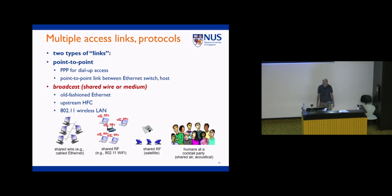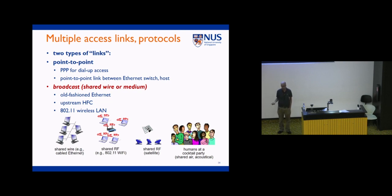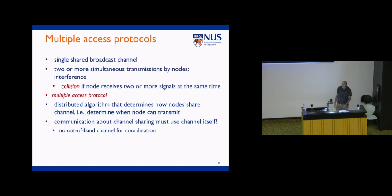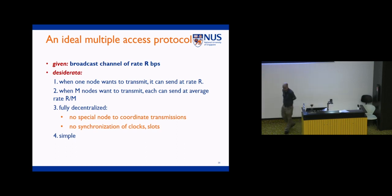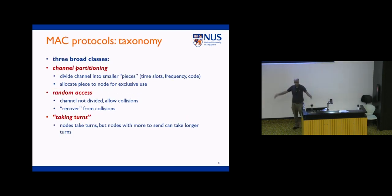Just a quick recap. One of the main features the link layer provides is multiple access — you're sharing a link or medium with multiple users. The question is: what rules determine how we share this link? Ideally, if only one user is active, that user should get all the resources. If multiple users want to use the network, they should each get one over M, where M is the number of users. There are three broad classes of protocols: taking turns, random access, and channel partitioning.